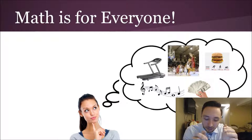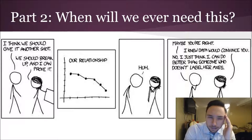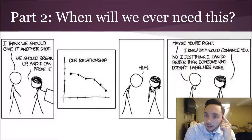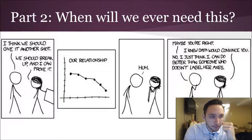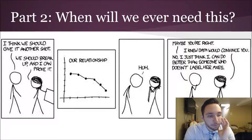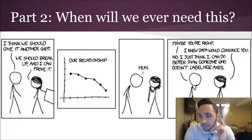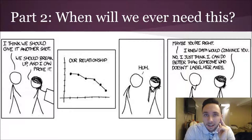Part two: when will we ever need this? So this is a nice little comic by xkcd. As you can see in this little situation, the male and presumably a female are just talking to each other and the male says I think we should give it another shot. The girl says we should break up and I can prove it and she shows a graph of their relationship. And he goes huh maybe you're right, I knew data would convince you she goes. Lastly he says no I just think I could do better than someone who doesn't label their axes. And if you go back to that second panel there, look at that - what does the x axis represent? I don't know. What does the y axis represent? I don't know. She didn't label her axes, what a noob right. So of course you wouldn't use math in this situation right. I don't actually think you should use math to break up with somebody, that's probably not going to go over well.